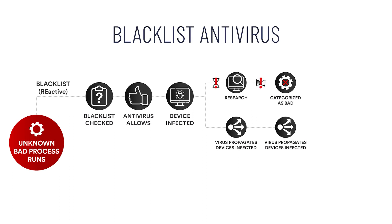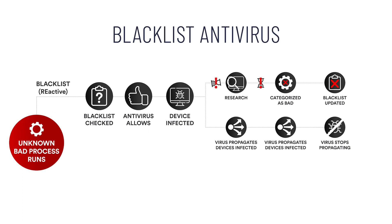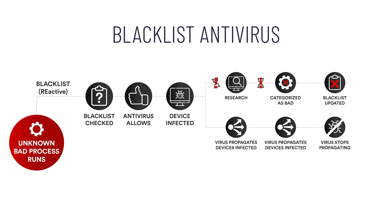Finally, the updated blacklist is sent to the antivirus program and the bad program is blocked from running in the future. Of course, at this point it's too late to stop the virus and reverse the damage that has been done. The blacklist approach only stops the malicious program from running once it has been researched, categorized as a known bad file, and added to the blacklist.